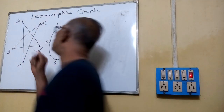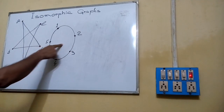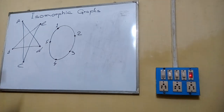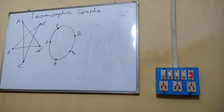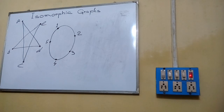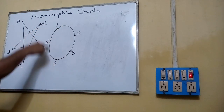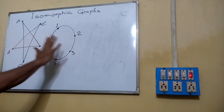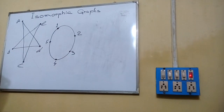Let us see these two graphs. This is one graph and this is another graph. We want to check whether these two graphs are isomorphic or not. First of all, check how many vertices there are. There are 5 vertices here, and here also there are 5 vertices. So there is a possibility that these two graphs may be isomorphic.